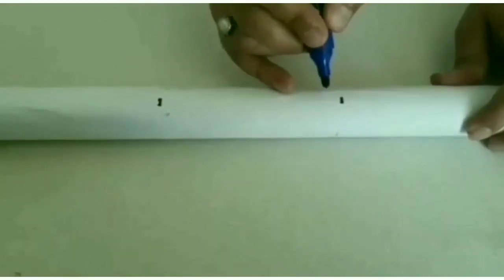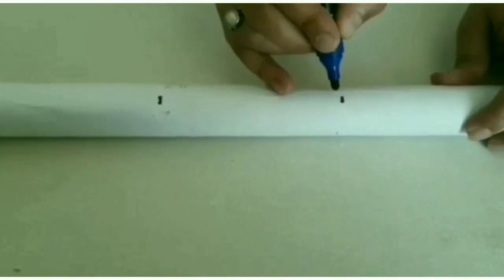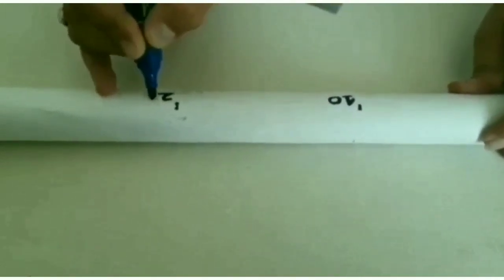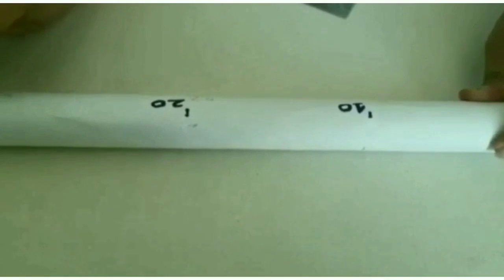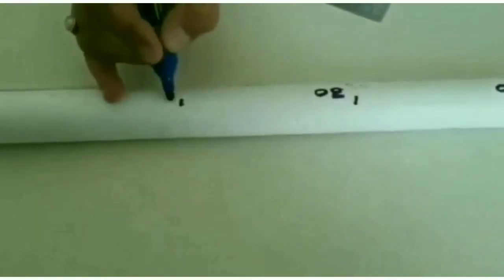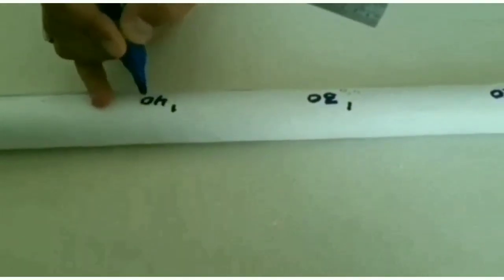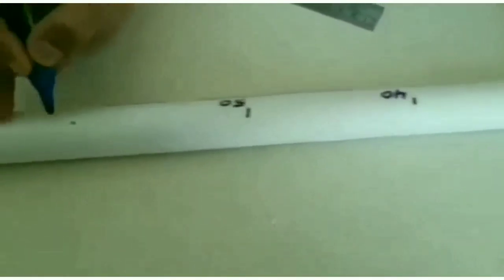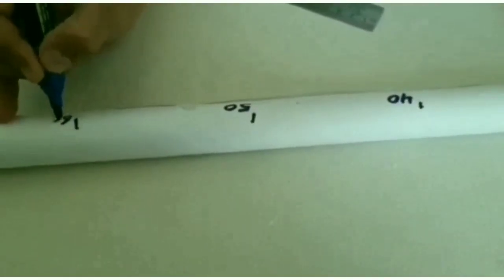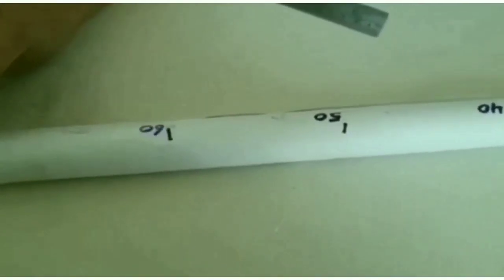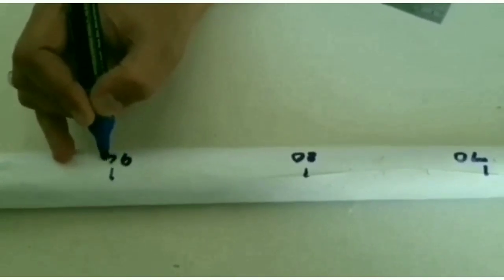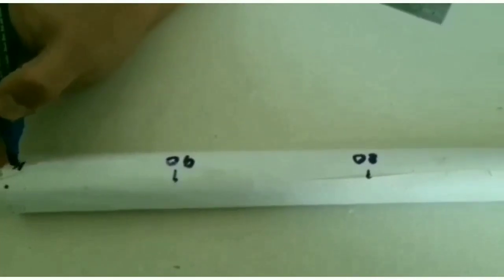We will write numbers like this: ten, twenty, thirty, forty, fifty, sixty, seventy, eighty, ninety, and hundred. So our hundred centimeter rod is ready which is equal to one meter.